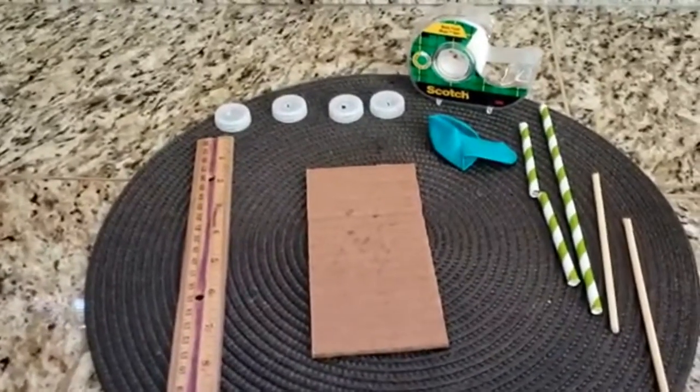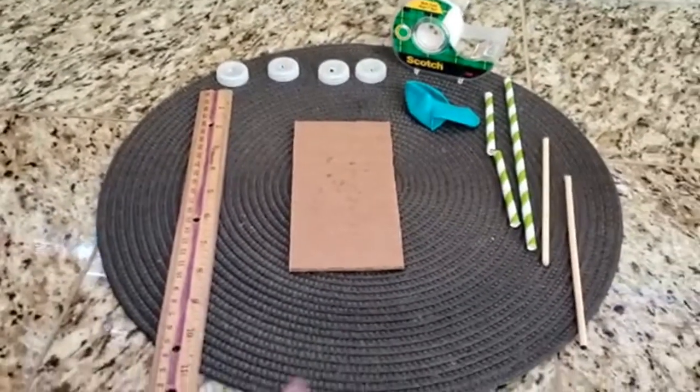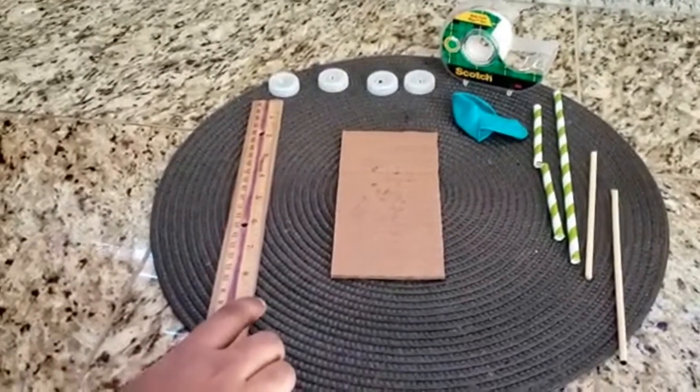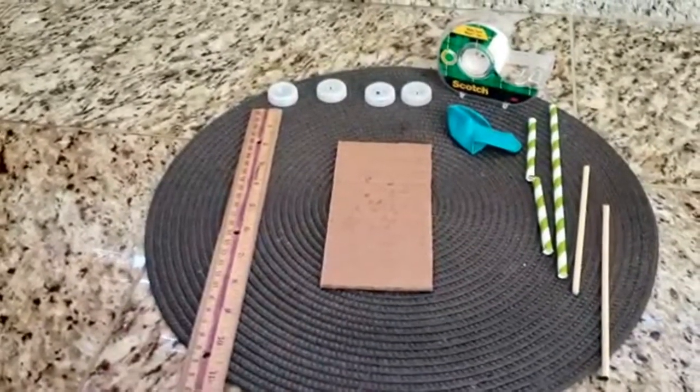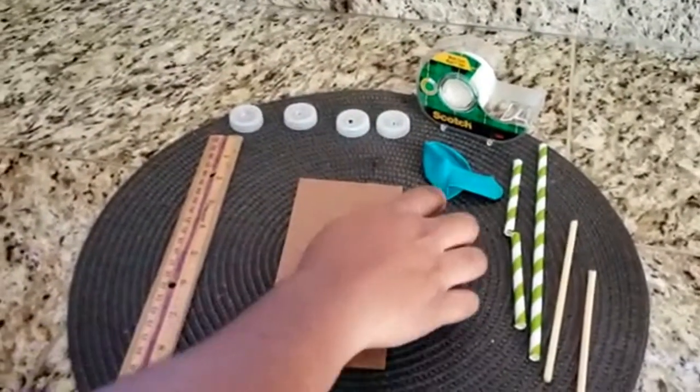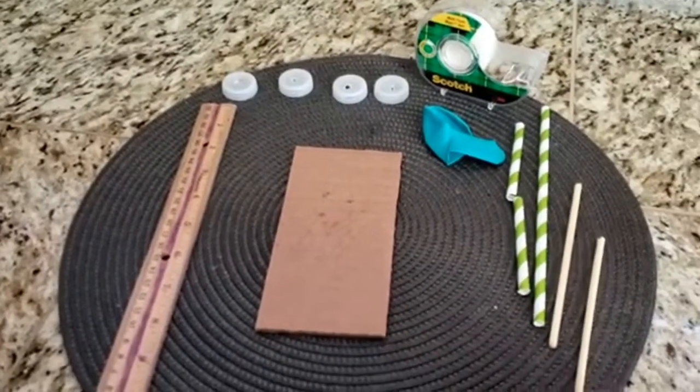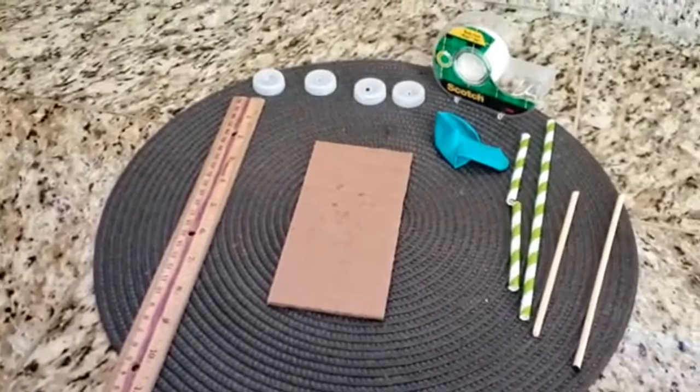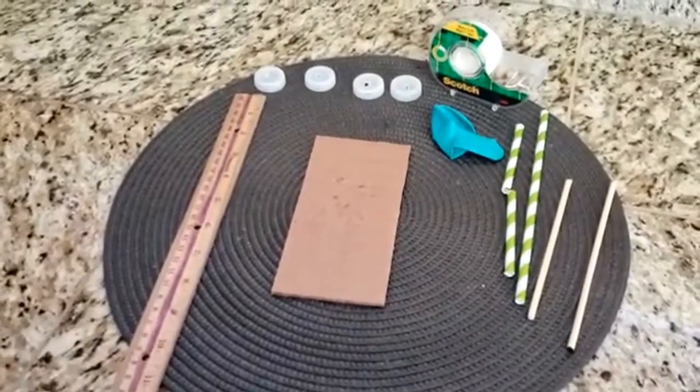For this experiment you will need: a three by six inch piece of cardboard, a ruler to measure the cardboard, four plastic bottle caps, tape, a balloon, two straws, and a skewer stick that has been cut in two. The first step is to cut the cardboard.